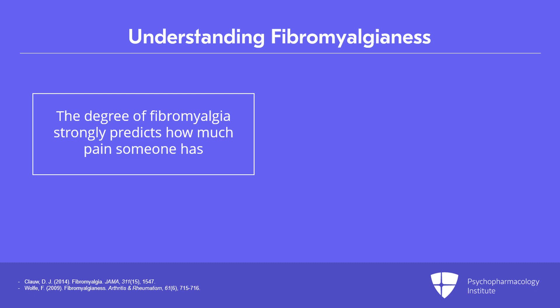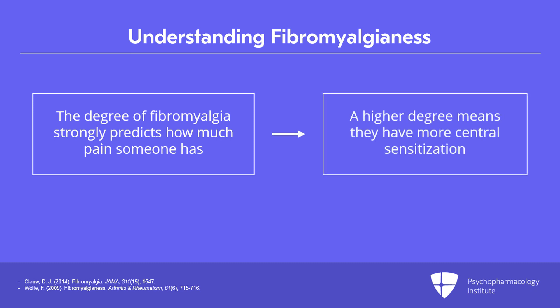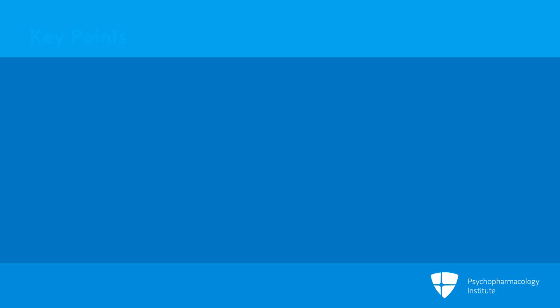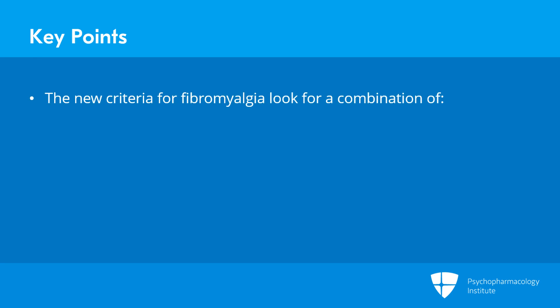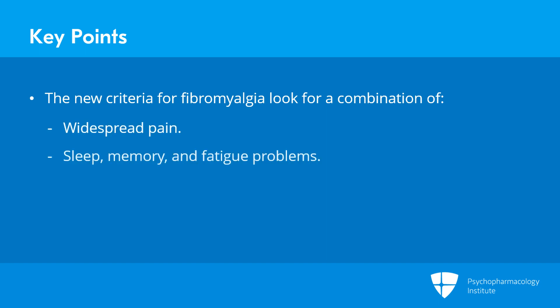What we see is that a higher degree of fibromyalgia — meaning more central sensitization and more nociplastic pain — strongly predicts outcomes. The new criteria for fibromyalgia and nociplastic pain look for a combination of more widespread pain, comorbid sleep, memory, and fatigue issues, as well as irritable bowel, depression, or headache.